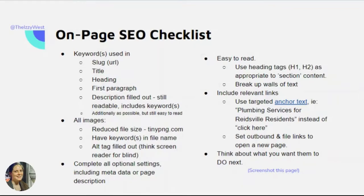To quickly skim through this slide, we're going to use keywords in our slug, which is our URL. So instead of something like theizywest slash numbers and jargon, we're going to put something that makes sense and uses words — especially our keyword or key phrase — like theizywest.com/on-page-seo. That way, when somebody gets to our site, it doesn't look sketchy or random. We know it's a real page because it has real words, and it also helps Google know that phrase is important.